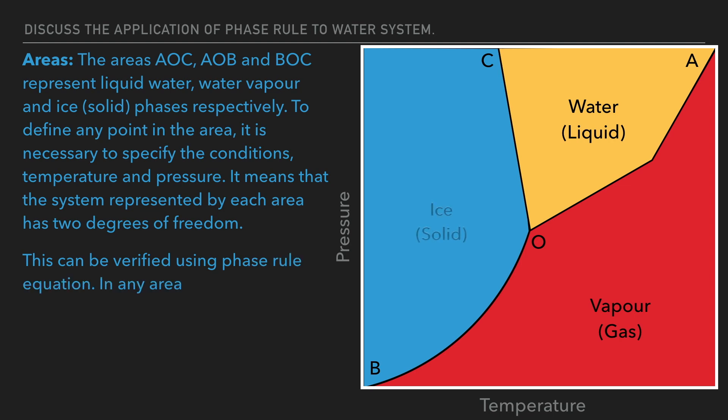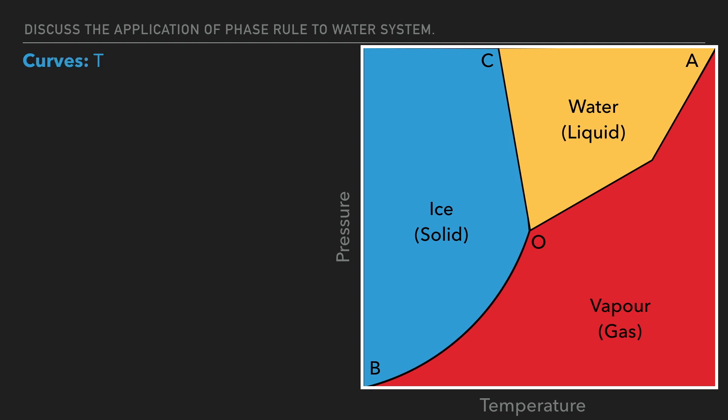In any area, number of phases P equals 1 and constituent C equals 1. According to phase rule, F equals C minus P plus 2. Therefore 1 minus 1 plus 2 which comes to 2. Thus the system is bivariant in any area.